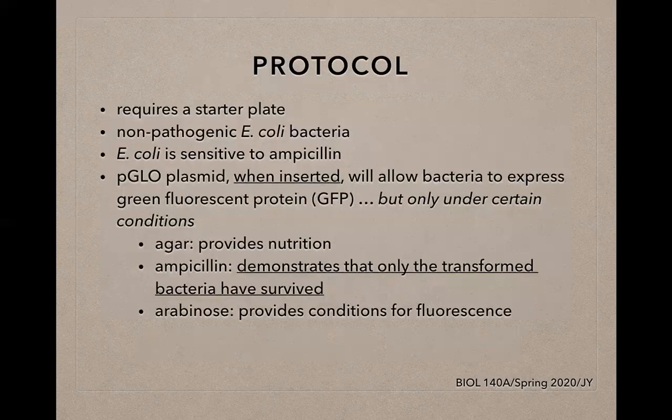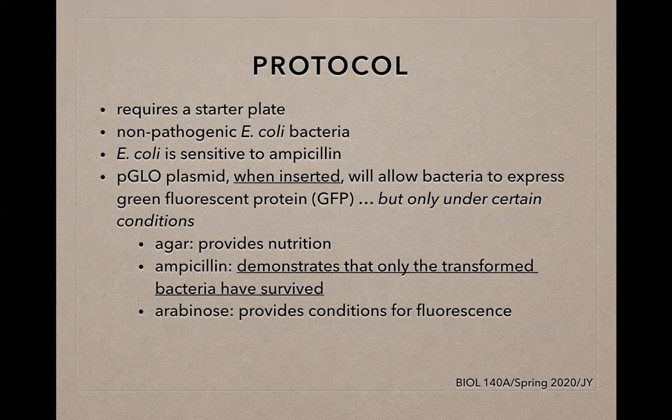Regarding the protocol, this experiment requires a starter plate — a typical-sized petri plate which includes non-pathogenic E. coli bacteria. The E. coli cells are sensitive to ampicillin. Through utilization of the PGLO plasmid, inserting this plasmid into bacterial cells will allow them to express green fluorescent protein later on, but only under certain conditions. The PGLO plasmid is inserted into bacterial cells using a heat shock method followed by an immediate cooling step on ice, in order to integrate those genes in the plasmid into the bacterial genome.